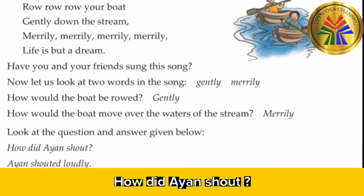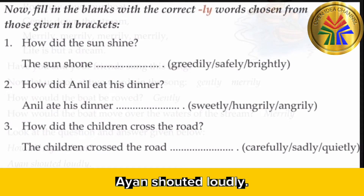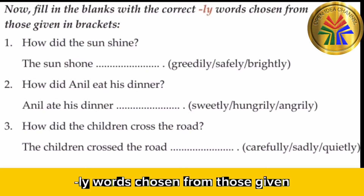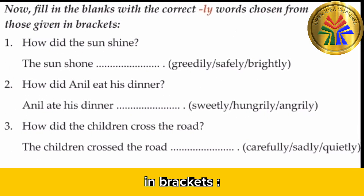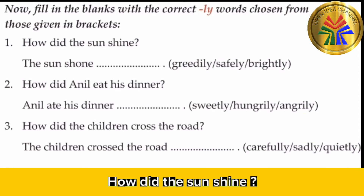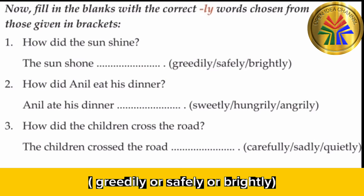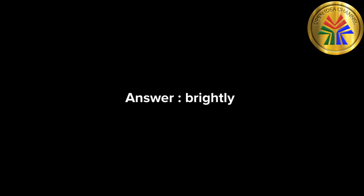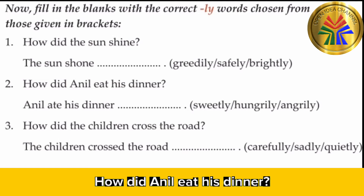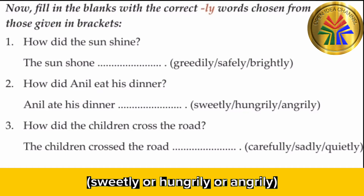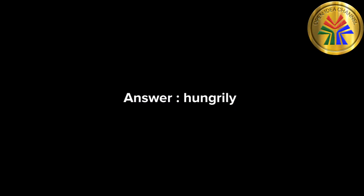Look at the question and answer given below: How did I shout? I shouted loudly. Now fill in the blanks with the correct '-ly' words chosen from those given in brackets. One: How did the sun shine? The sun shone — creatively, safely, or brightly? Answer: brightly. Two: How did Ani eat his dinner? Ani ate his dinner — sweetly, hungrily, or angrily? Answer: hungrily.